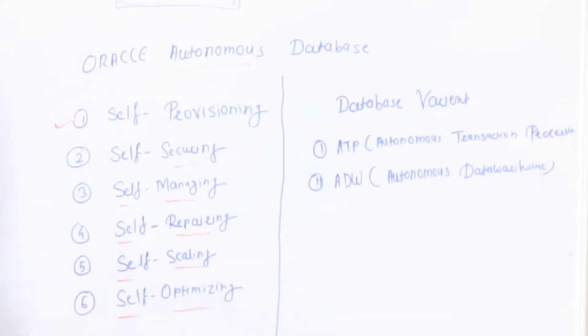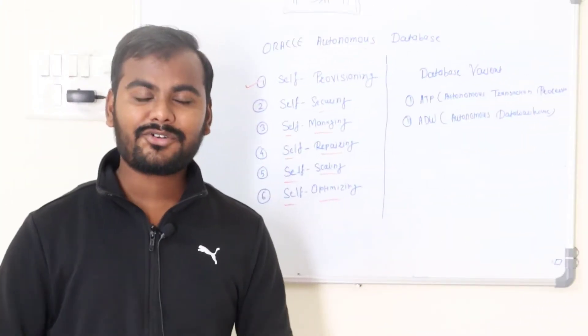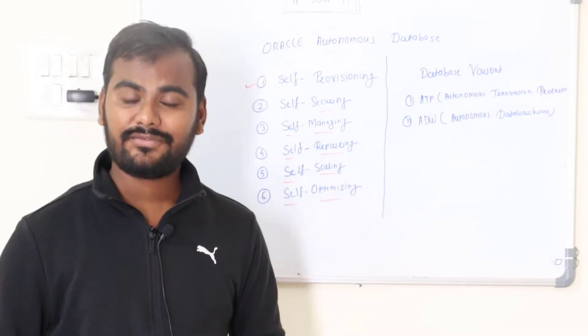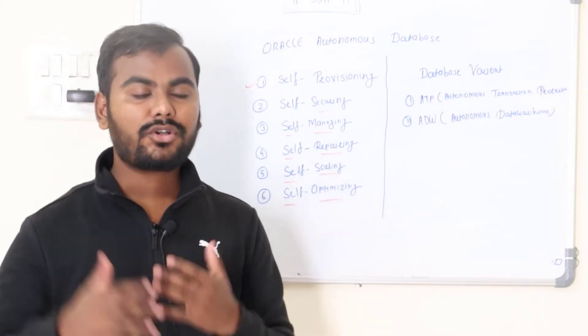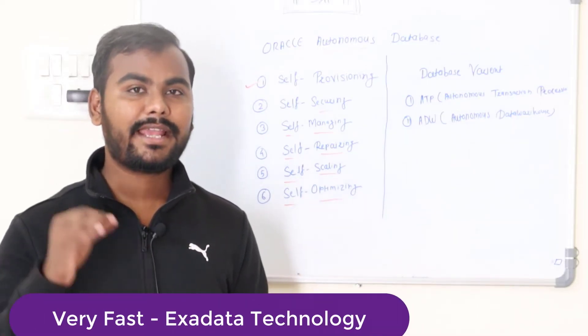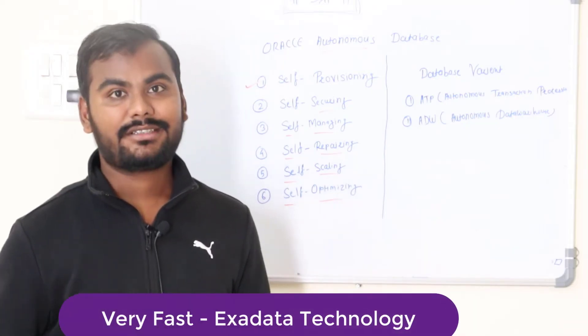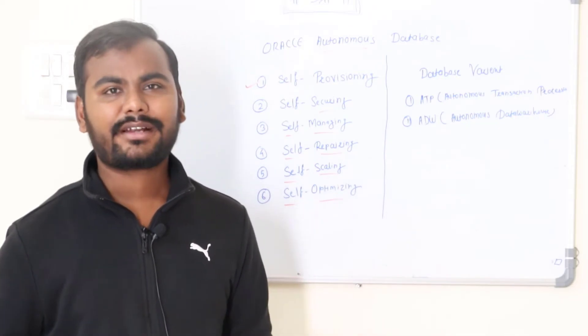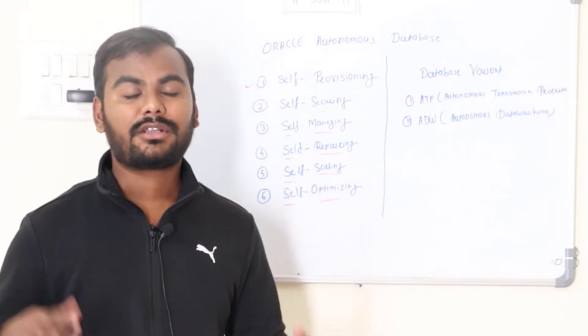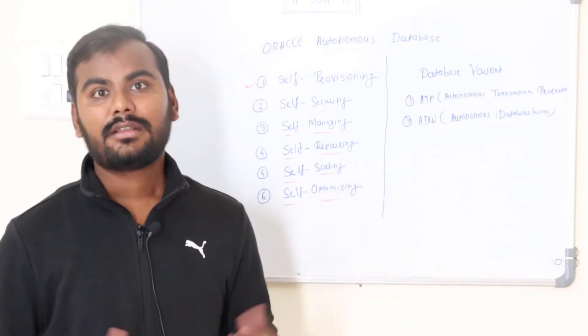Second thing is ADW. This variant is mainly focusing on the data warehouse. Oracle Autonomous Database is really fast because this autonomous database is based upon the Exadata technology. Exadata is the next generation Oracle database, which is mainly useful for faster processing.